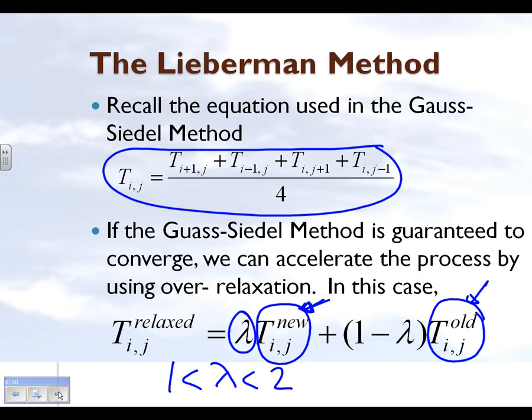The reason why we are doing that is simple. We want to accelerate the convergence of finding these temperatures. We are able to take such a route because the coefficient matrix for this particular problem turns out to be diagonally dominant. Since it's diagonally dominant, we know that Gauss-Seidel method is guaranteed to converge, and we accelerate this convergence process by choosing a lambda between 1 and 2.